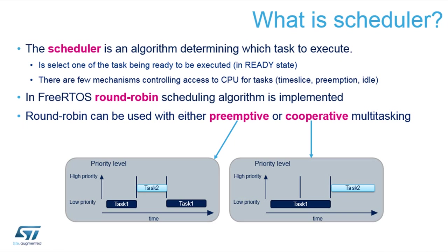If you have two or more tasks with the same priority, it will move in a round-robin. So if three tasks have the same priority and task one finishes, it looks at task two; when task two finishes, it looks at task three; when three is finished, it goes back to task one. But if a task with higher priority is ready, it always jumps to that task.